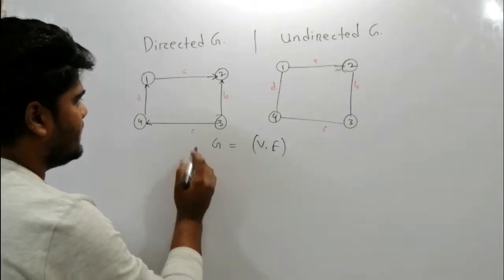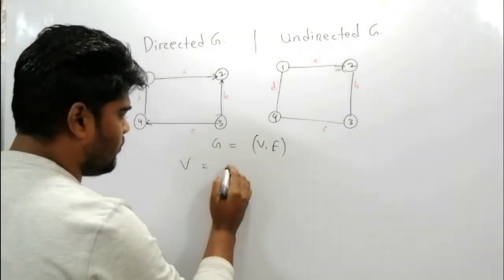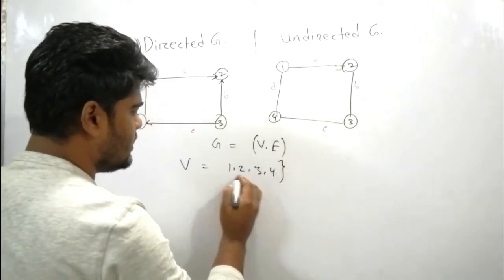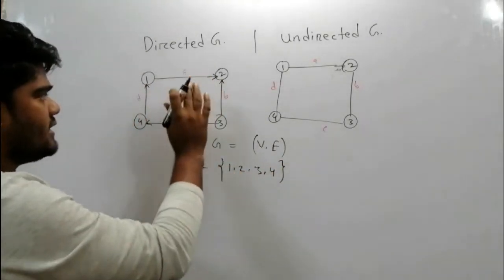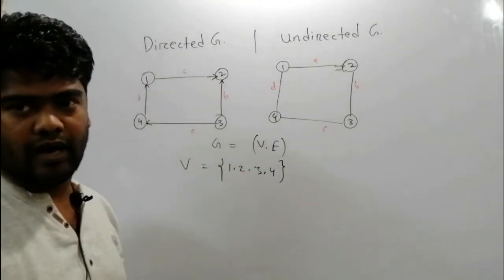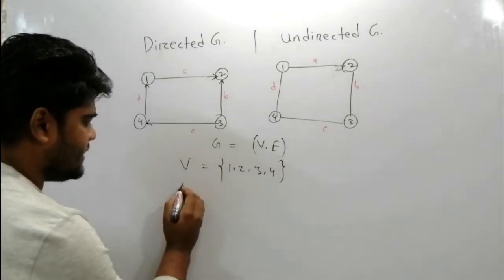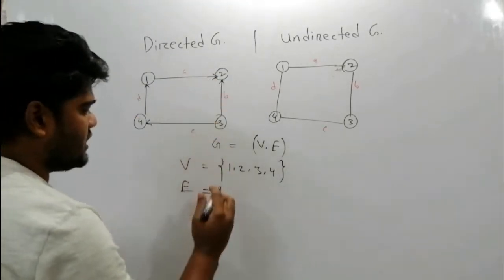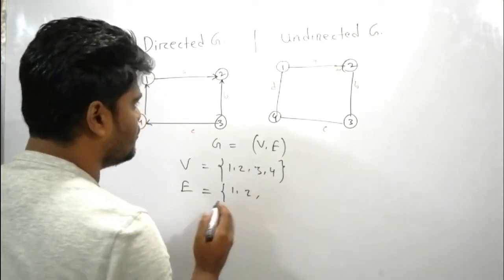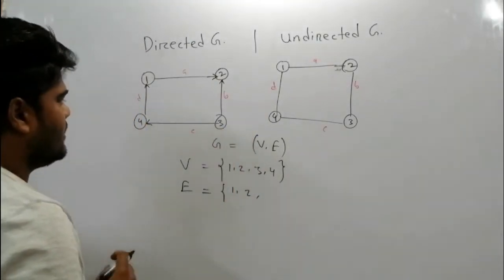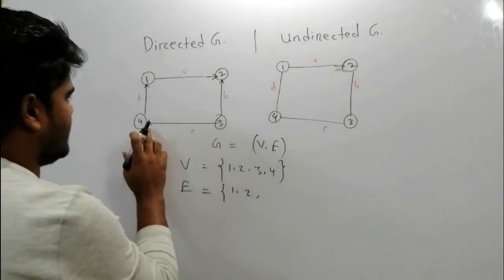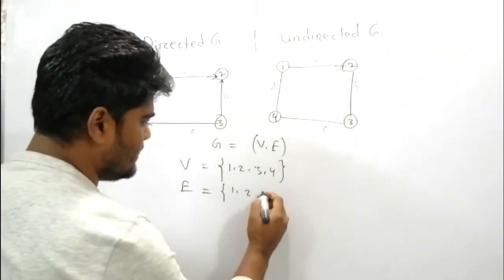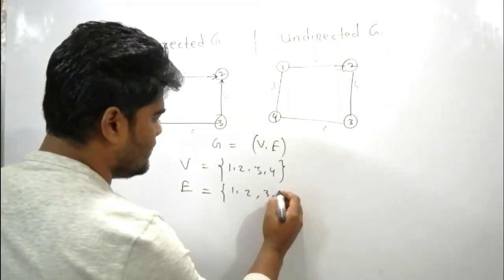The vertex set is 1, 2, 3, 4. Here is a directed graph, same as the set where the connections go from 2 to 4, and 3 to 4.